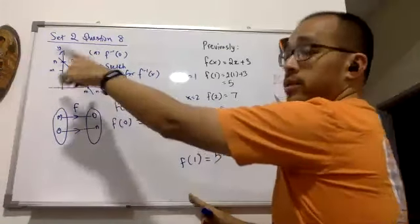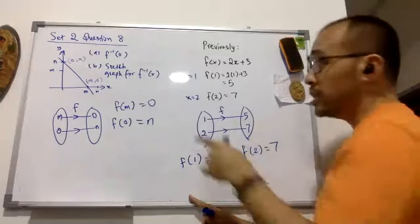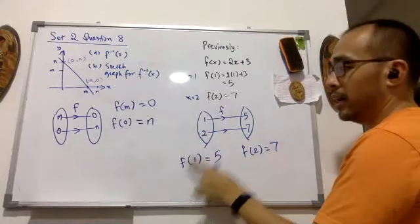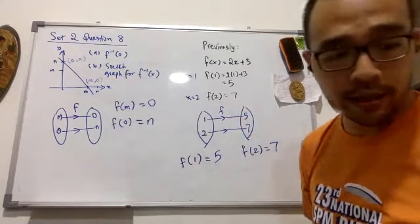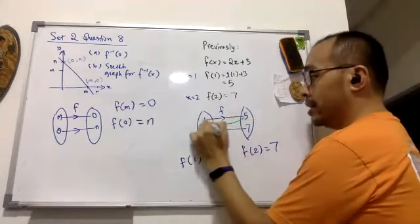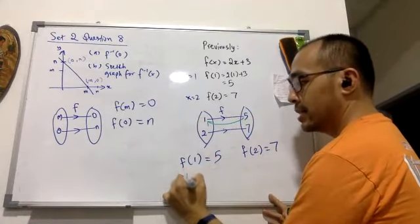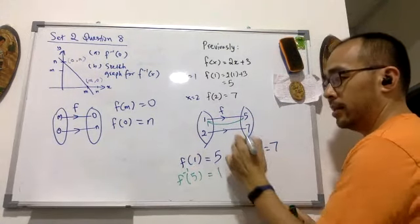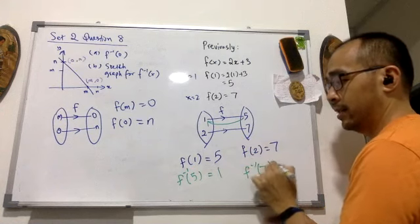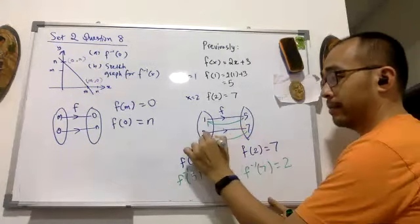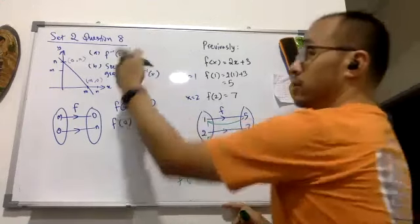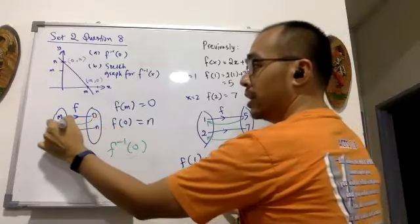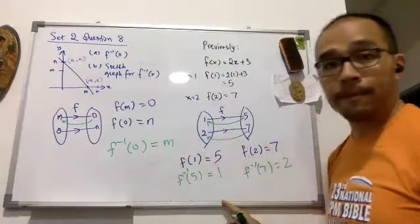By taking the x and y coordinates from the graph, the question is asking: what is the inverse of 0? f(1) is 5, so going back the other way, the inverse of 5 is 1, and the inverse of 7 is 2. So what's the inverse of 0? You look for 0 here and inverse it back — the answer will be m.